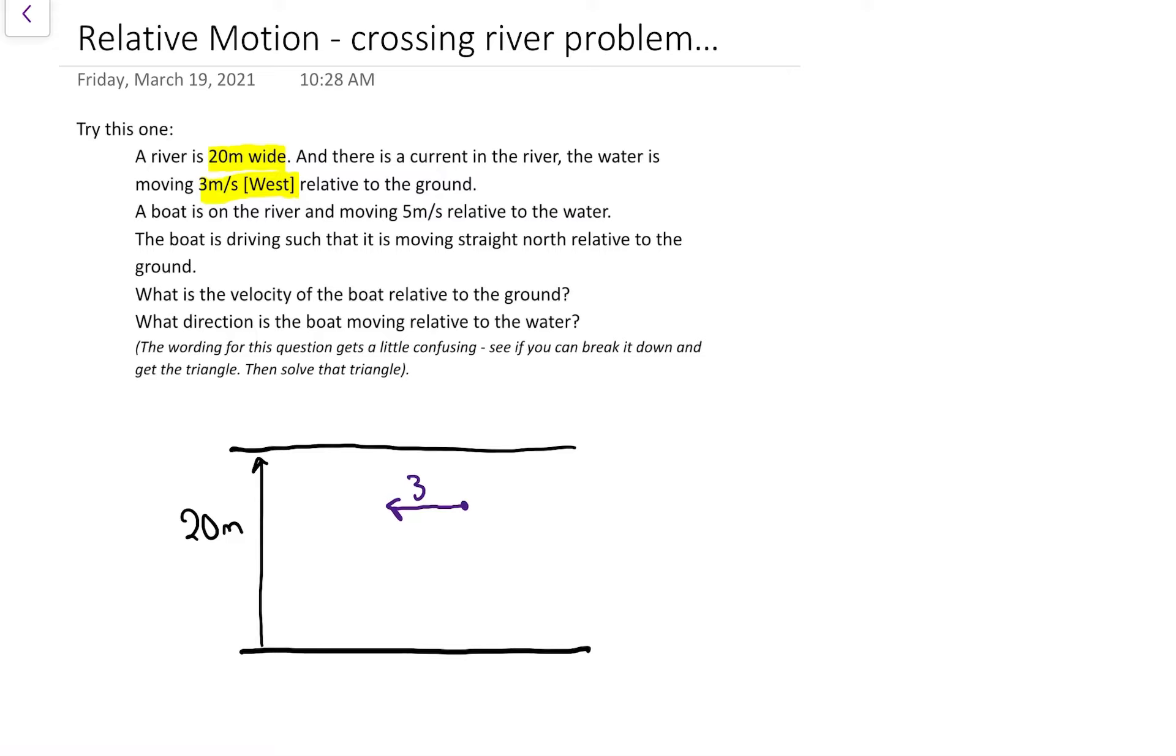Then it says a boat is on the river and moving 5 meters per second relative to the water. So before when I was told about the current, I was given the number and the direction. Now when I'm told about the water, I'm just given the number but I don't know the exact direction. It didn't tell me that.